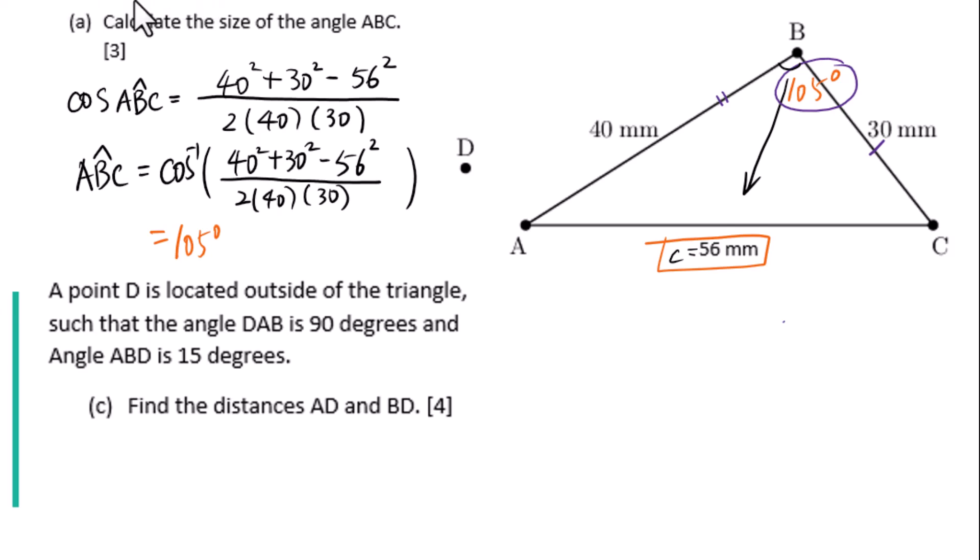Let's go to C. A point D is located outside of the triangle, such that the angle DAB is 90 degrees and the angle ABD is 15 degrees. This is 15 degrees. Find the distance AD and BD.